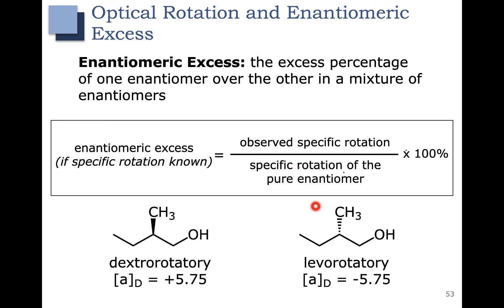Let's use these compounds here as an example. Let's say you have an observed specific rotation of +5. We take our observed specific rotation, divide by the specific rotation of the pure enantiomer, which is 5.75, and multiply by 100%. This gives you 87% enantiomeric excess.